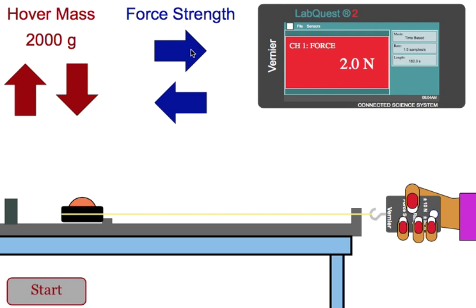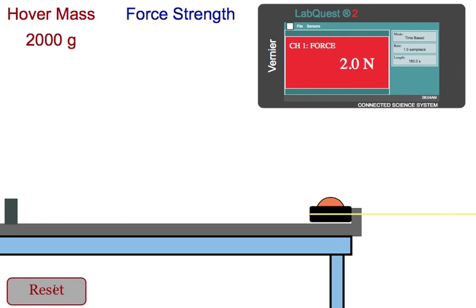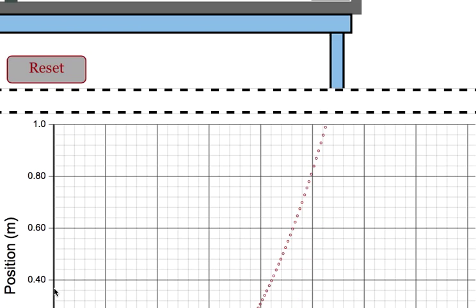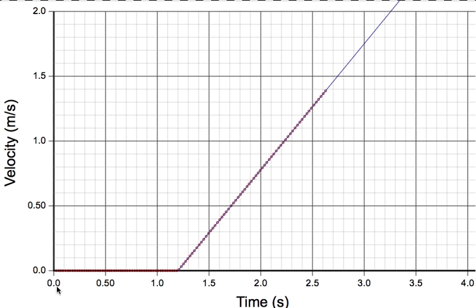When we look at force, in this case we double our force. Again, we collect our data, and we notice that in comparison with the last one that we just did, when we doubled our force, we get double our acceleration.